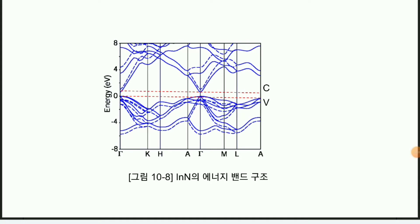From now on, I will discuss the Fermi surface of metals and high magnetic field effects. In previous times, we studied the energy band structure. This is a typical energy band structure — for example, here, Gamma, K, H, A — these are certain points in the reciprocal Bravais lattice. The energy eigenvalue can be calculated from various methods like LDA or density functional theory. Many methods can be employed, and the method can be described later.